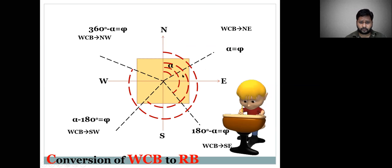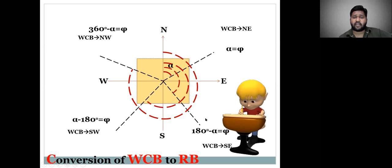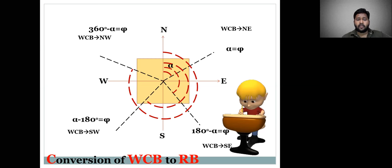For conversion of Whole-Circle Bearing to Reduced Bearing: use 360 minus alpha to get the northwest quadrant angle, and alpha minus 180 gives the southwest quadrant angle. These formulas will help you easily convert Whole-Circle Bearing into Reduced Bearing for any problem given.